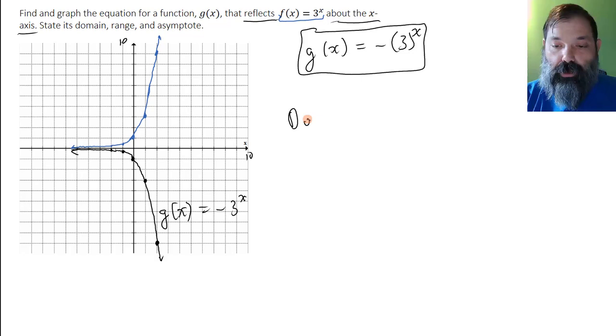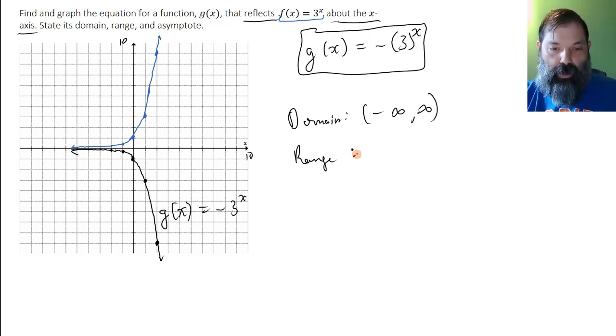The domain of the function, g(x), is all real numbers, negative infinity to infinity in interval notation. The range of the function g(x)—it looks like we can get large negative numbers, and then our outputs can go up to 0, but not include 0. So I will write the range as negative infinity to 0.